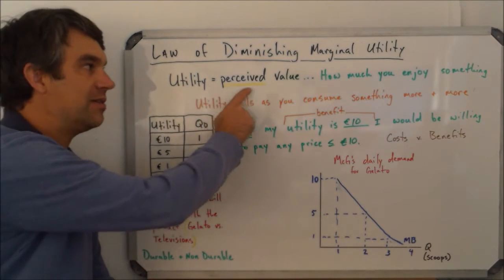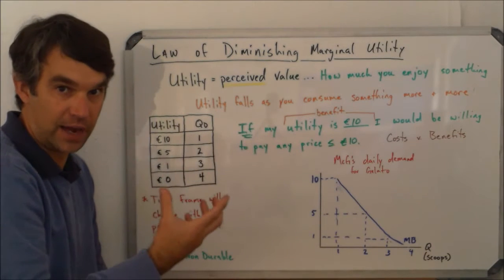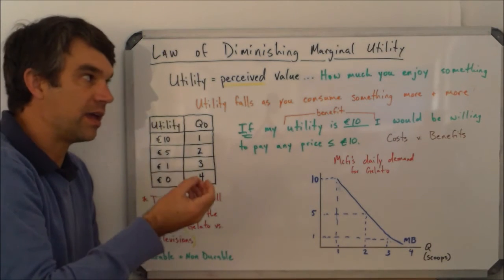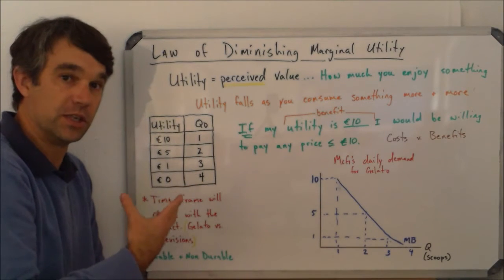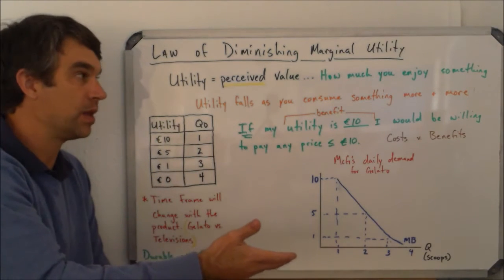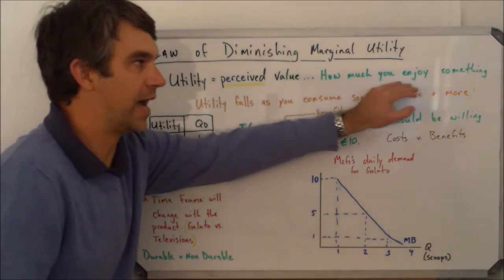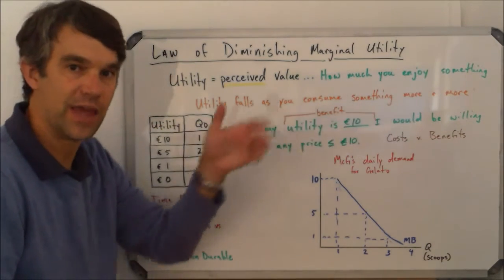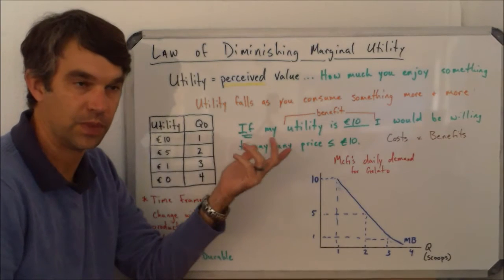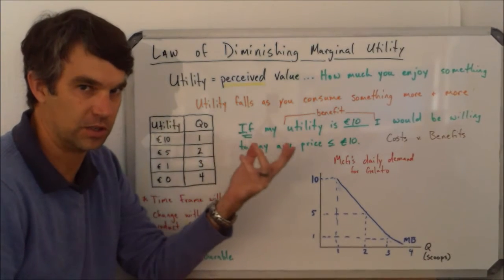Utility is the perceived value of an item. So something you buy, you think that it's probably going to be worth more to you than what you actually pay. So if you could put a number on how much you actually enjoy something, that number would be its utility. So it goes beyond just its usefulness.